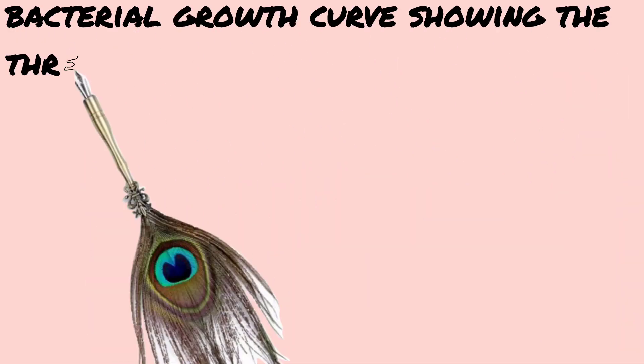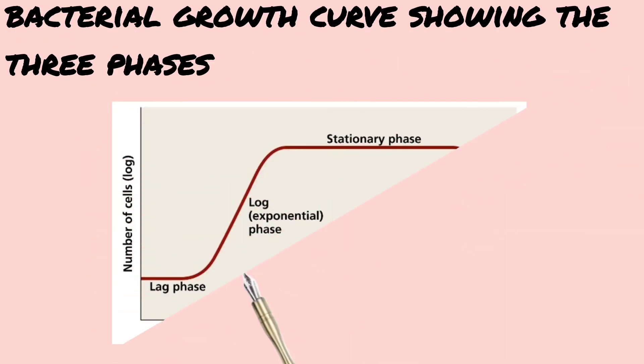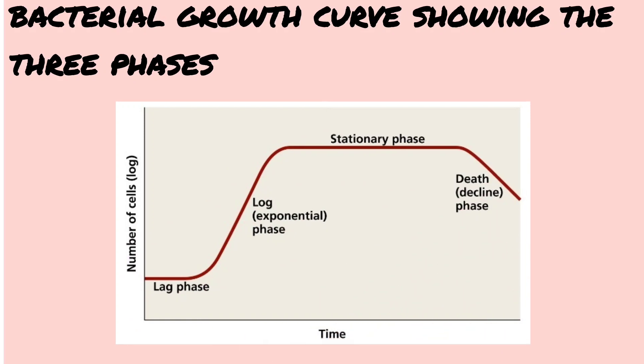Bacterial growth curve showing the four phases. Now we have the bacterial growth curve, which represents the four phases of bacterial growth. The very first phase is the lag phase. The lag phase is a flat period of adjustment, enlargement of the cell.